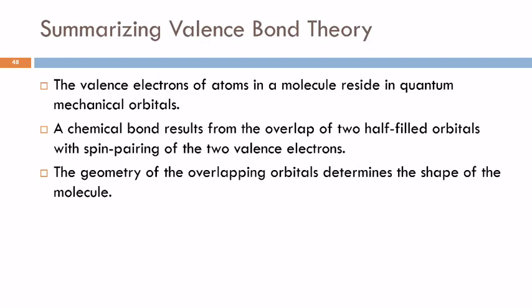So this is a summary of what we've talked about so far. Valence electrons of atoms in a molecule reside in quantum mechanical orbitals. A chemical bond results from the overlap of two half-filled orbitals with spin pairing of the two valence electrons. And this meshes with Lewis theory, right? Because in Lewis theory we were looking at atoms sharing electrons. And that shared pair, the bond, is two electrons.